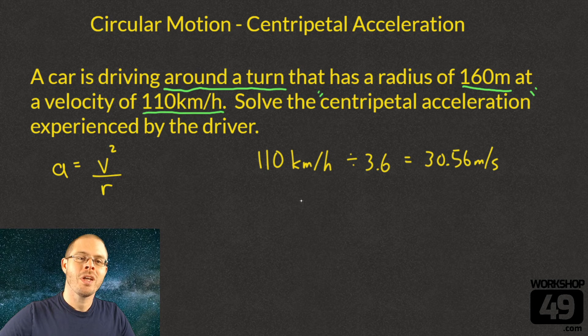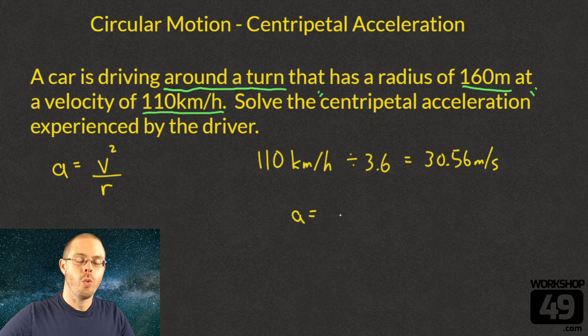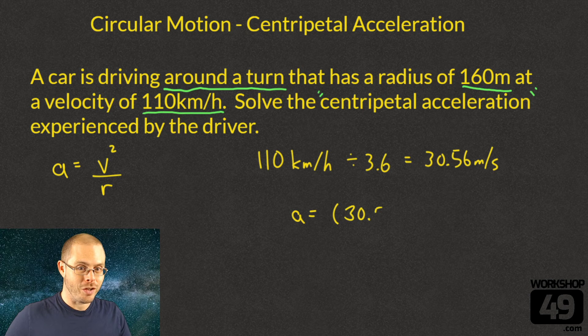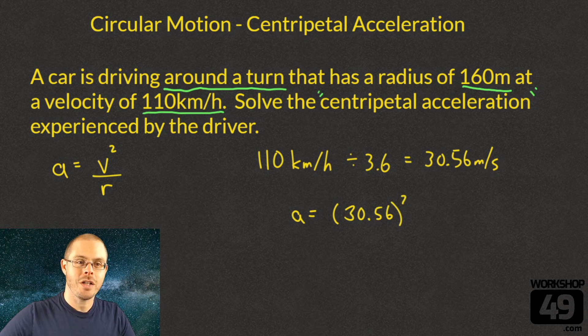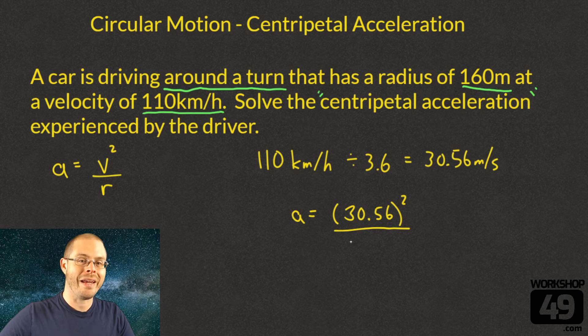Let's go ahead and set this into the equation. Our acceleration will equal 30.56 - that's the velocity we solved for - squared (don't forget that part), all divided by the radius of the turn, which is 160 meters.